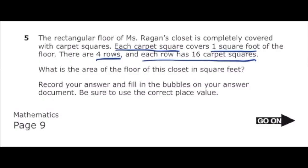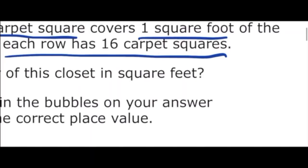There's 4 rows and each row has 16 carpet squares. All we have to do is multiply 16 times 4 to get our answer. 6 times 4 is 24. I'm going to carry the 2, and then 1 times 4 is 4 plus the 2 is 6. Our answer is going to be 64.